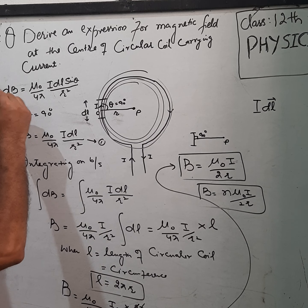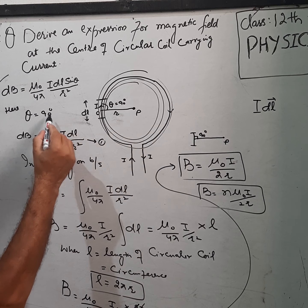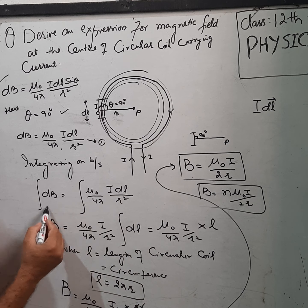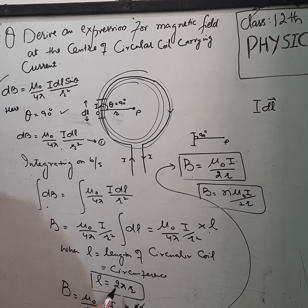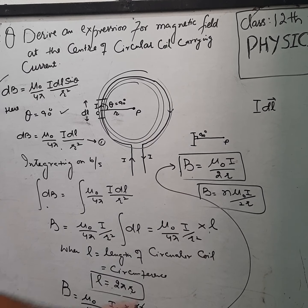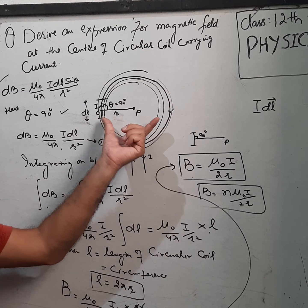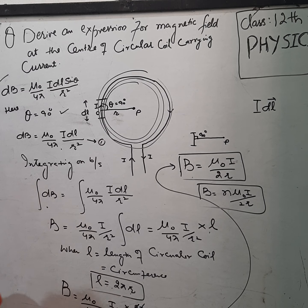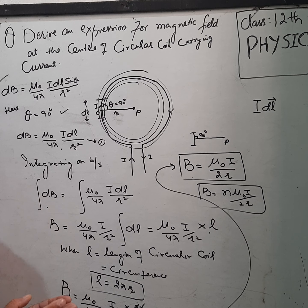पहले Biot-Savart Law लगाइए, θ = 90° लगाइए, dl integrate कीजिए, l की integration 2πr है, इसका value put कीजिए — expression आएगा। If there are n number of turns, then B = nμ₀I / 2r. This is the first application of Biot-Savart Law. Thank you.